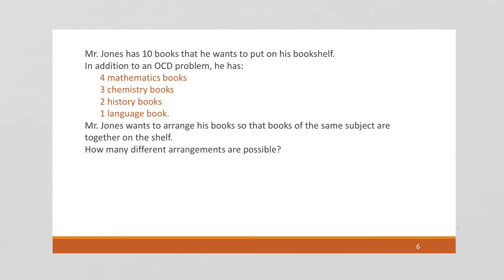So here's another puzzle. We have a guy, Mr. Jones, who has 10 books that he wants to put on his bookshelf. He has four mathematics books, three chemistry books, two history books, and one language book. And he wants to arrange his books so that the books of the same subject are together on the shelf. So we imagine his bookshelf here. He might want all of the four mathematics books together, and then the three chemistry books, and then the history book, and then finally, one language, then finally the two history books. So he wants to group them together. And within the group, he doesn't care how they're ordered. He just wants to group them by subject.